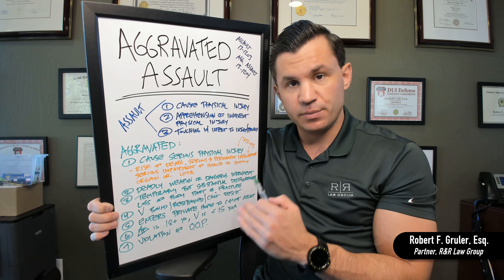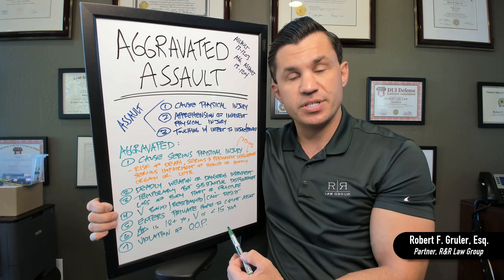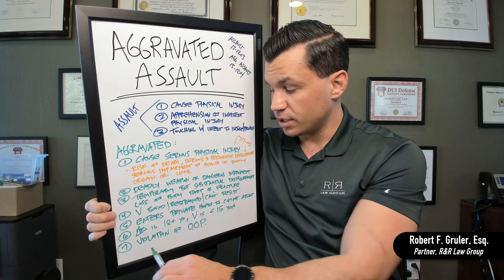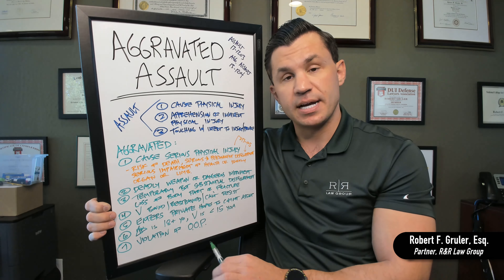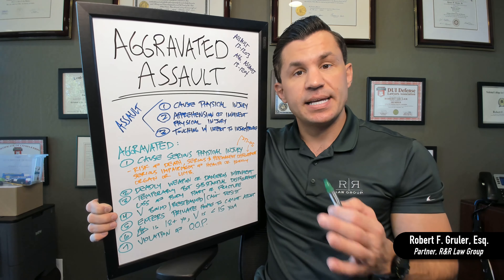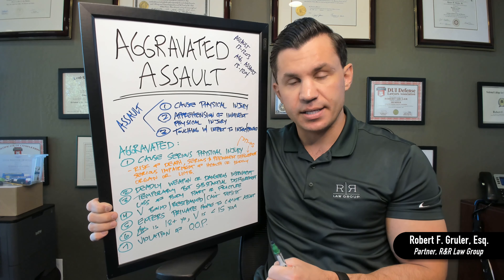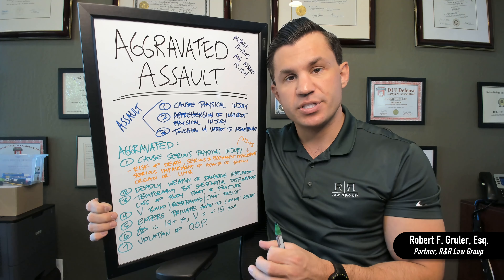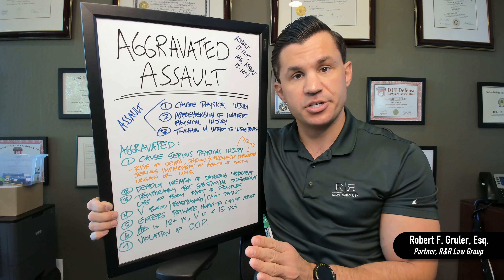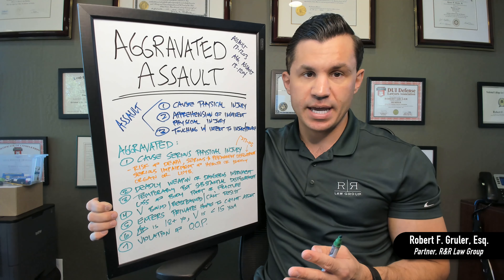Number six: if the defendant is 18 years or older and the victim is under the age of 15, that's going to be aggravated. An adult committing an assault on someone under 15 is not a simple assault — even if it's just a minor physical injury or some level of touching. When there is that significant age differential between the person alleged to have committed the assault and the recipient, that's going to be aggravated assault.